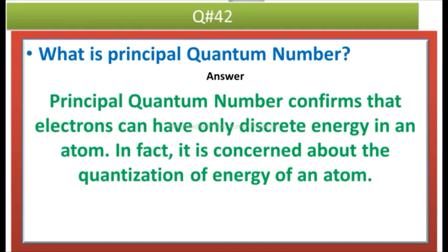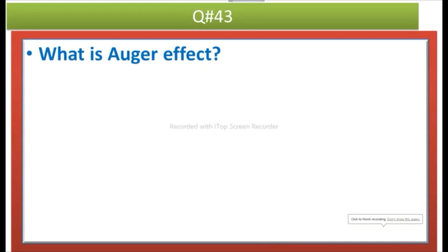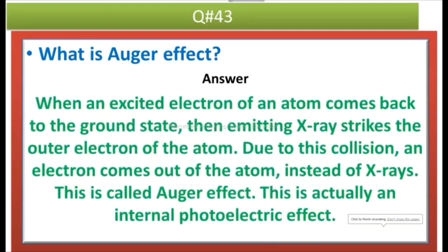What is Auger effect? Answer: When an excited electron of an atom comes back to the ground state, then emitting x-ray strikes the outer electron of the atom. Due to this collision, an electron comes out of the atom instead of x-rays. This is called Auger effect. This is actually an internal photoelectric effect.